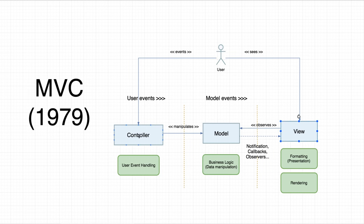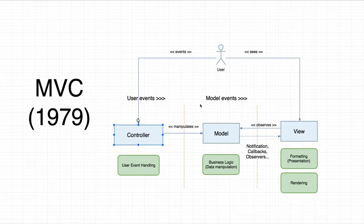The view also had no dependency on the controller. Over time this changed to accommodate different frameworks and application types. When the web started, views became JSON, XML or HTML and just couldn't observe messages from the model directly, so the controller started referencing the view to pass the model data through. This pattern was always focused on user interface — things like database storage and network connections were never concerns of MVC. They lived somewhere else, which is why MVC was never considered an architecture.